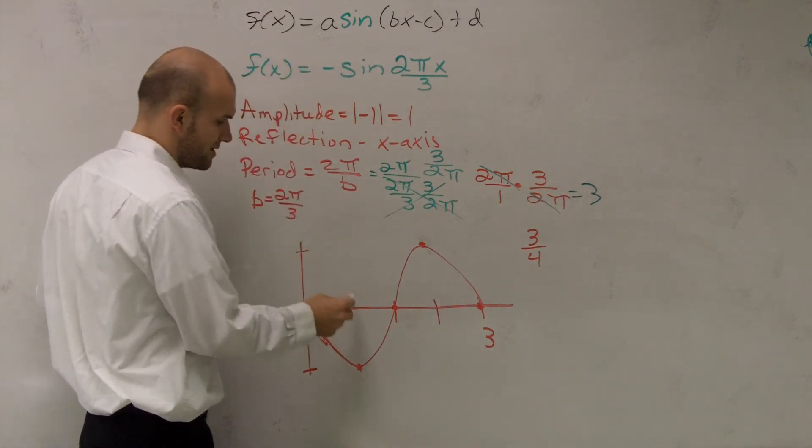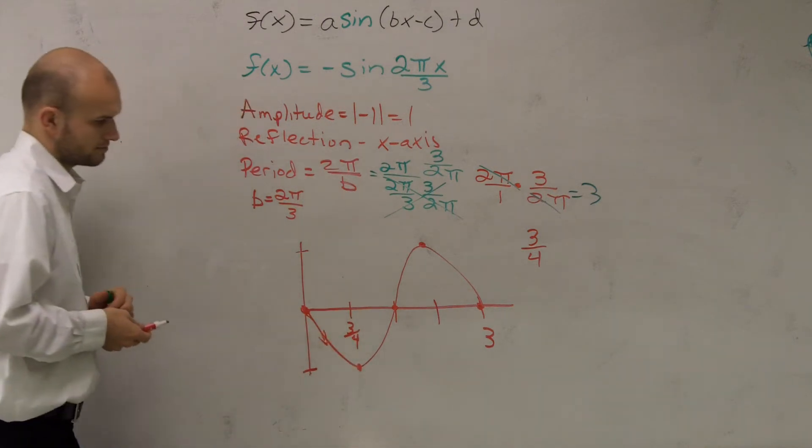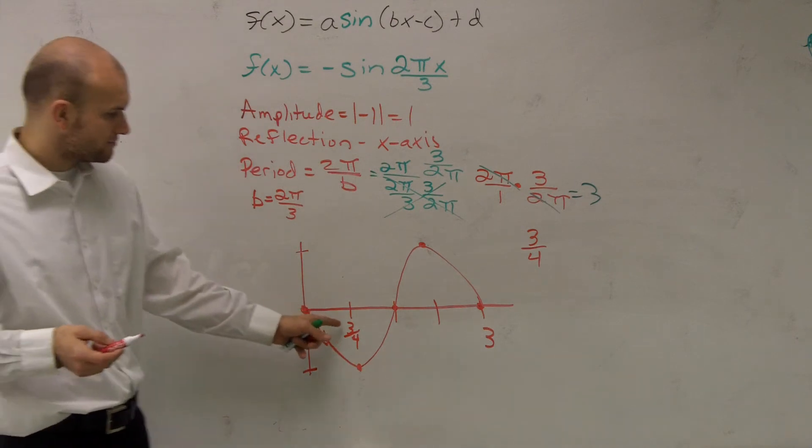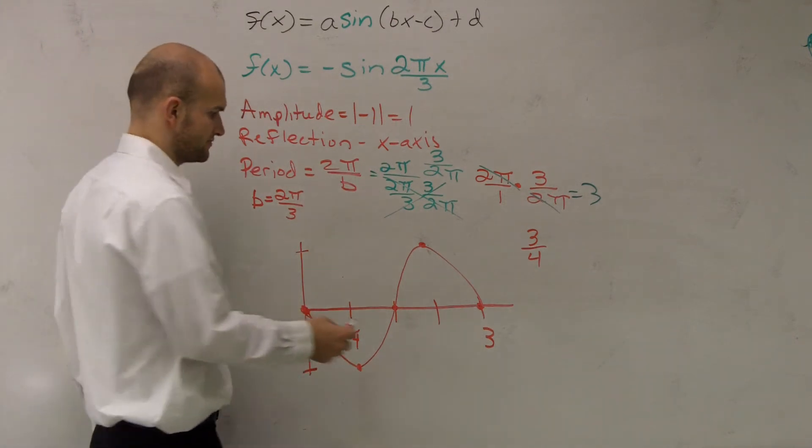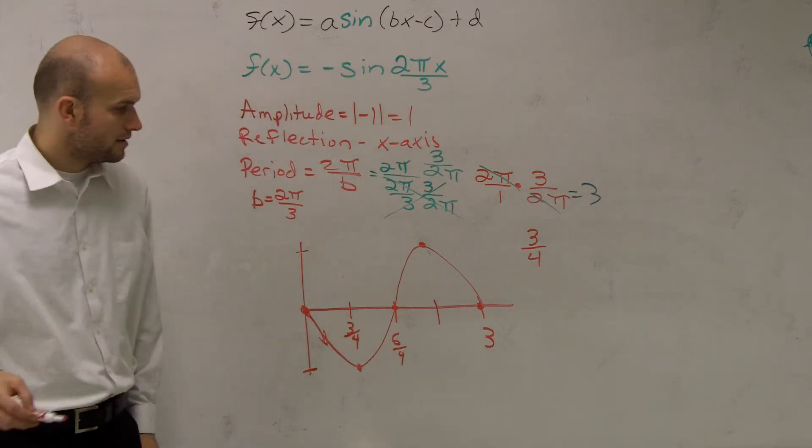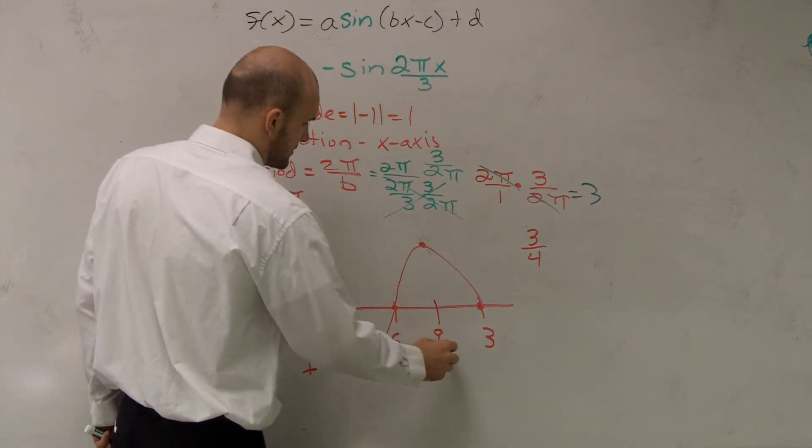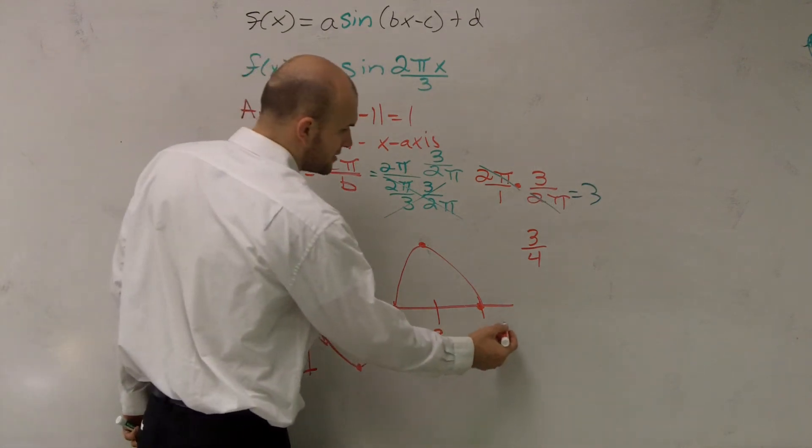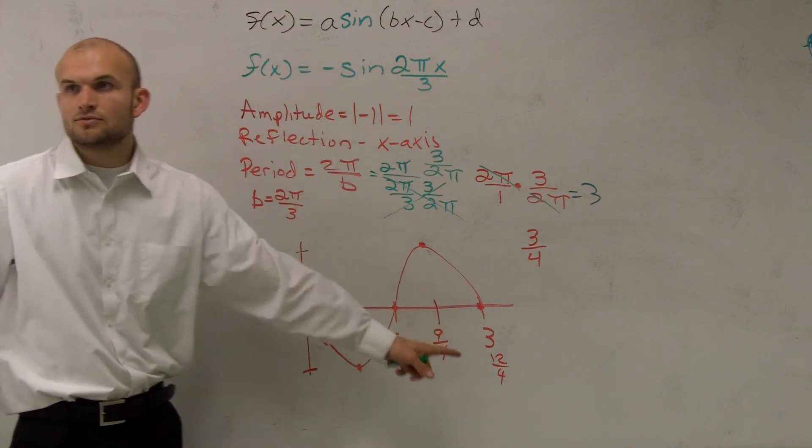So first one we're going to have is obviously 3 fourths. Right? Then a 3 fourths plus another 3 fourths is going to be 6 fourths. Then the next one is going to be 9 fourths. Right?